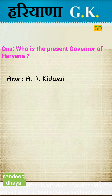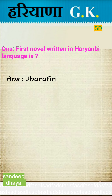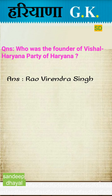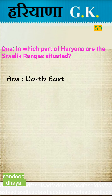Who is the present Governor of Haryana? Answer: Captain Singh Soranki is the present Governor. The first novel written in Haryanvi language is 'Jhadu Phil'. Who was the founder of Vishal Haryana Party? Answer: Rao Virender Singh. In which part of Haryana are the Shivalik ranges situated? Answer: North-east.